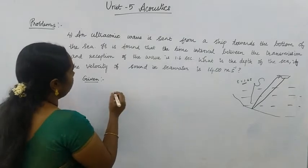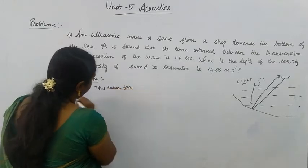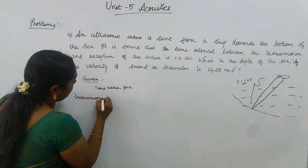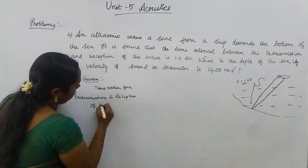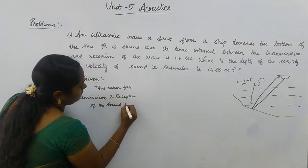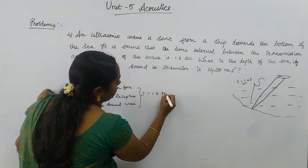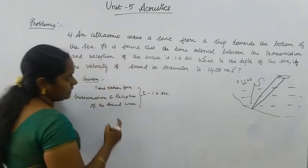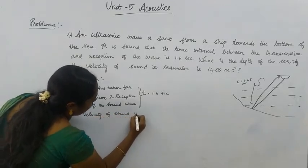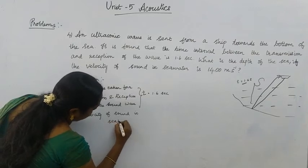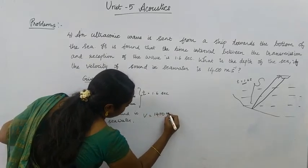What is given? First, the time taken for both transmission and reception of the sound wave: T is equal to 1.6 seconds. Next, the velocity of sound in seawater: V is equal to 1400 meters per second.